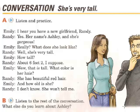Unit 9, 'What does she look like?' Page 59, Exercise 2: Conversation — 'She's very tall.' Part A: Listen and practice. 'I hear you have a new girlfriend, Randy.' 'Yes, her name's Ashley and she's gorgeous.' 'Really? What does she look like?' 'Well, she's very tall.' 'How tall?' 'About six feet two, I suppose.' 'Wow, that is tall!'